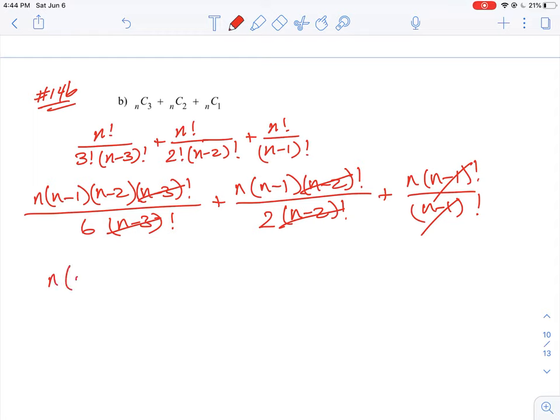So we're going to do n times n squared minus 3n plus 2 all over 6. This is going to be n squared minus n all over 2, and this is just going to be n over 1. So that simplifies it a little bit easier.